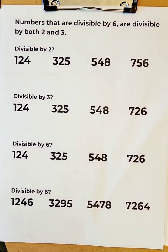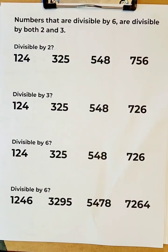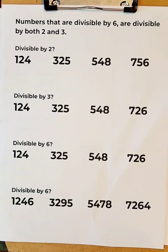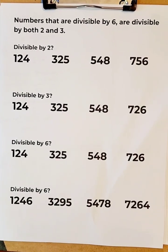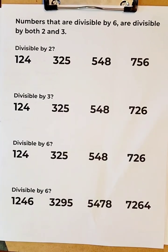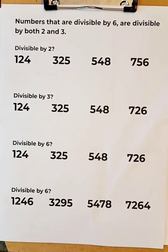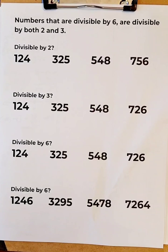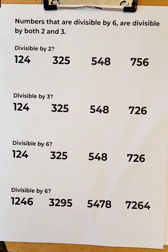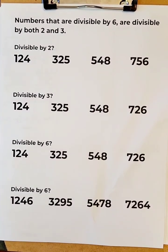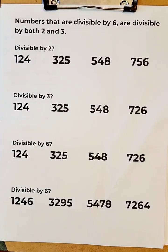Numbers are divisible by six if they are divisible by both two and three. So we're going to do a little review of what it means to be divisible by two and three, and then we'll see about being divisible by six.